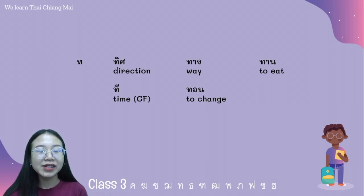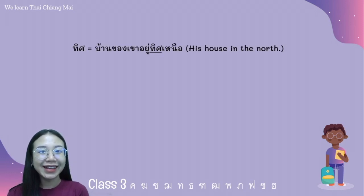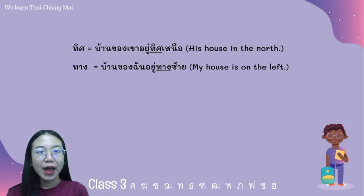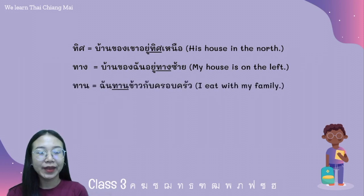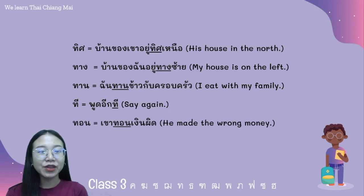Next, ทอทหาร. The first word is ทิด, then ทาง, ทาน, ที, and ทอน. For example, ทิด: บ้านของเขาอยู่ทิดเหนือ. The word ทาง: บ้านของฉันอยู่ทางซ้าย. The word ทาน: ฉันทานข้าวกับครอบครัว — ทาน means to eat. The word ทาน is more formal. The word ที — for example, พูดอีกที. And the word ทอน — for example, เขาทอนเงินผิด.